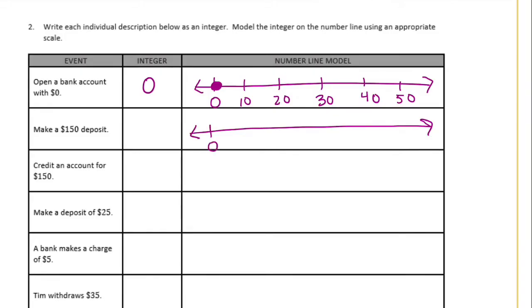He makes a $150 deposit. So now he puts $150 into his bank account. So instead of being at zero where he was before, I'll count by fifties. He deposits $150 so now he has 150, so our integer would be 150. Then credit an account for $150. So the bank teller says okay you have $150 and puts it in his account. So it's going to be the same as our last number line.